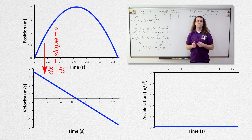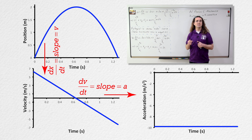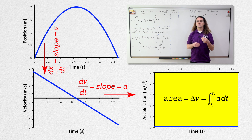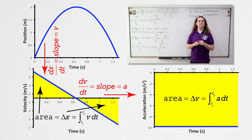Velocity is the derivative of position with respect to time; therefore, the slope of a position-versus-time graph is velocity. Acceleration is the derivative of velocity with respect to time; therefore, the slope of a velocity-versus-time graph is acceleration. The definite integral of acceleration with respect to time is change in velocity; therefore, the area under an acceleration-versus-time graph is change in velocity. The definite integral of velocity with respect to time is displacement; therefore, the area under a velocity-versus-time graph is displacement.